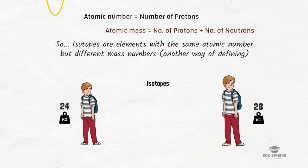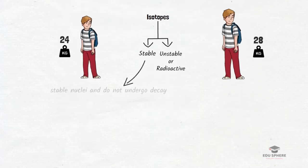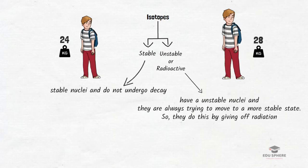Now isotopes are divided into two categories. Radioactive isotopes and stable isotopes. Stable isotopes have a stable combination of protons and neutrons. So they have stable nuclei and they do not undergo decay. While radioactive isotopes have an unstable combination of protons and neutrons. So they have unstable nuclei and they are always trying to move to a more stable state. So they do this by giving off radiation.